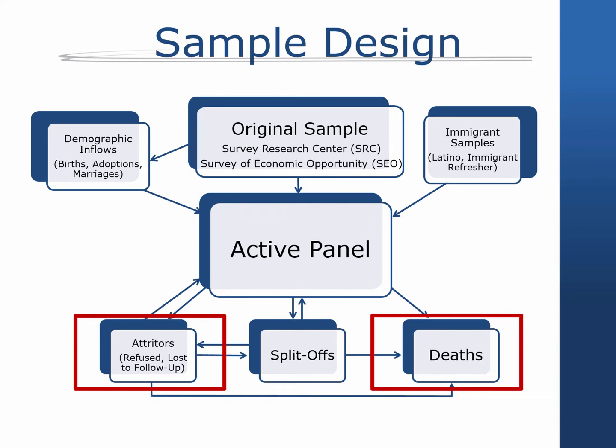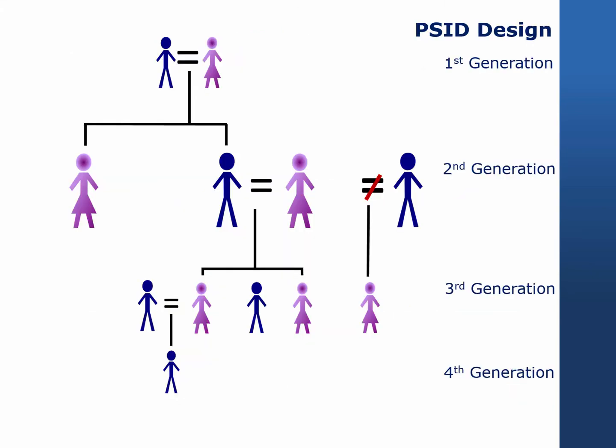Respondents can be followed and remain part of the active panel via the main interview for their entire lives. Each wave, some sample attrition occurs when a few families leave the study because they cannot be located or refuse to participate for two waves in a row. Response rates for the main interview sample have been over 95% for virtually every wave.